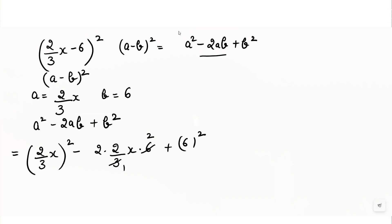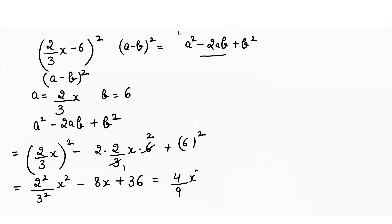We take the square of each value within the bracket. So (2/3x)² gives 2² over 3², which is 4/9 x². Then minus 2 into 2 is 4, and 4 into 2 is 8, giving minus 8x. And 6² gives 36. So the result is 4/9 x² minus 8x plus 36.